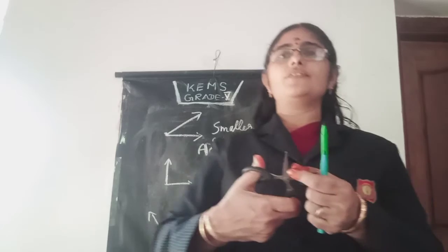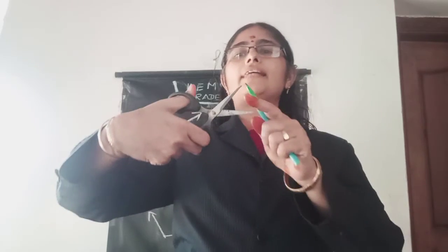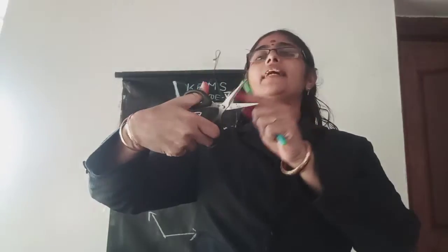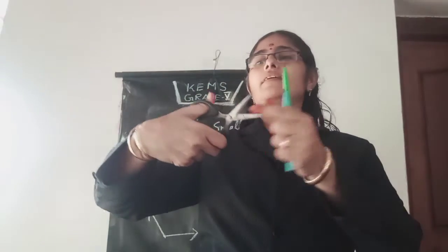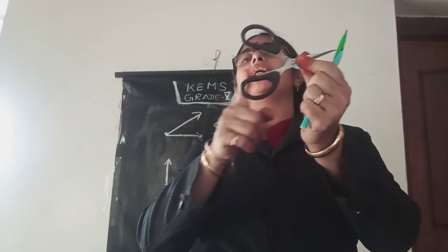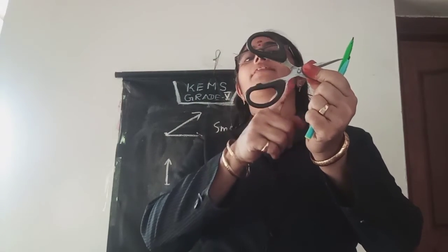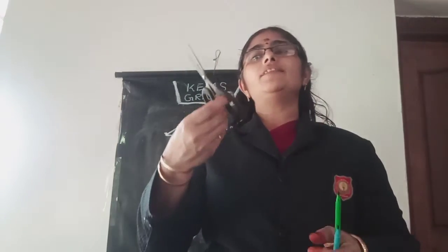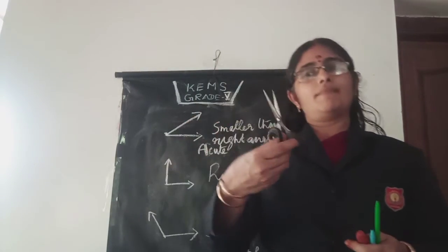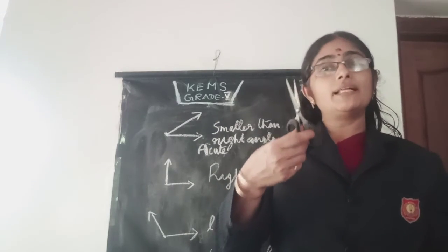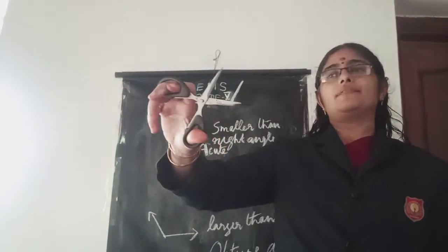You know scissors? It is an angle. This makes an angle. This side also makes an angle. You know many things having a similar shape of an angle.